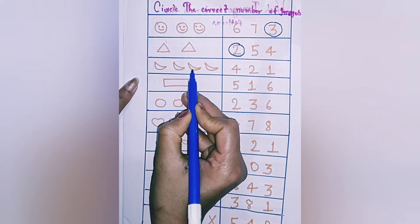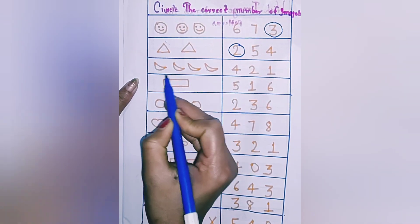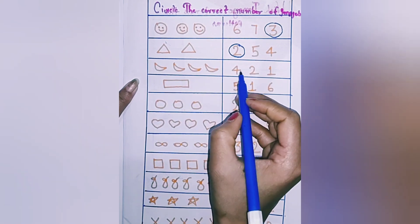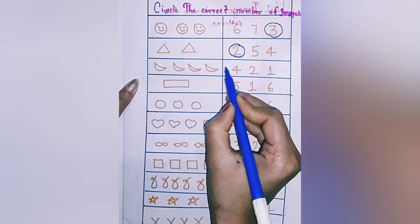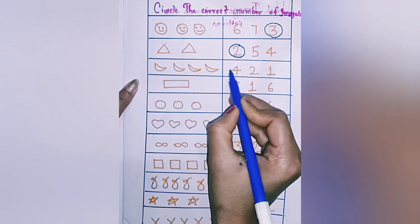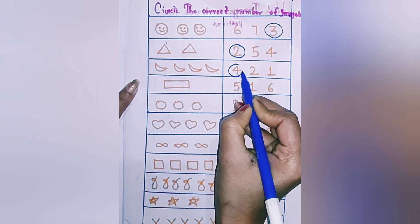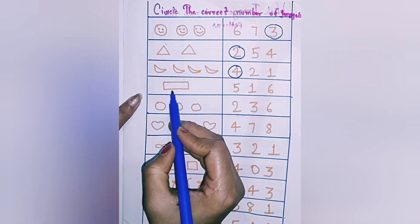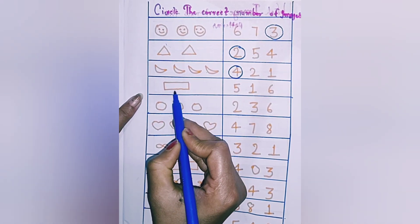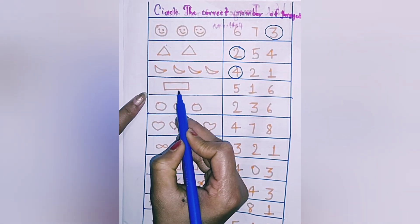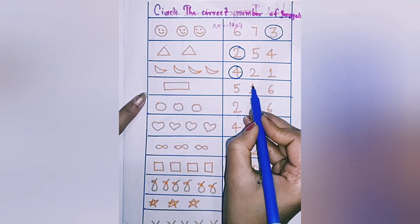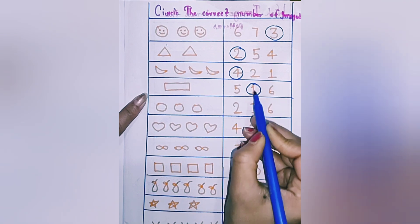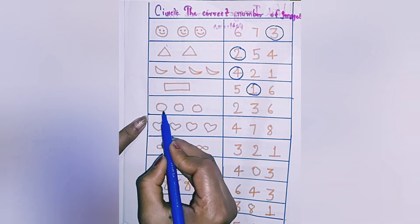Again count — one, two, three, four. How many moon are there? There are four. Four. How many rectangle are there? Again count.